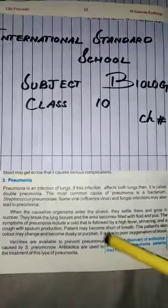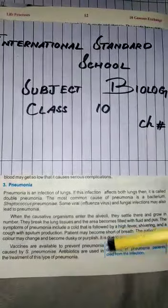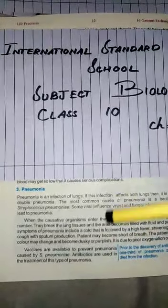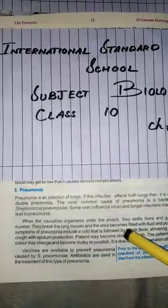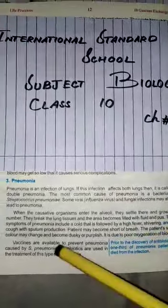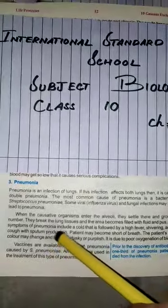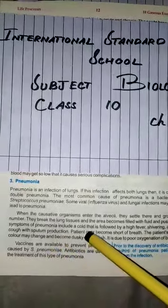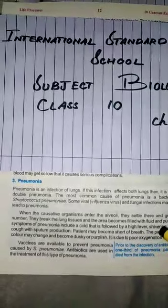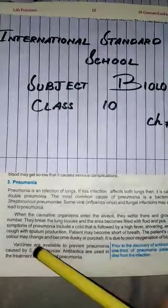Whenever the causative organisms of pneumonia enter the lungs, they settle there and grow in number. They break the lung tissue and the area becomes filled with fluid and pus.